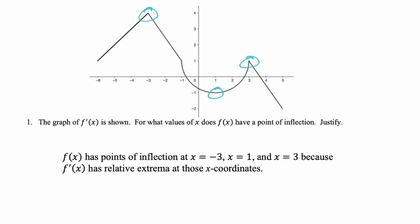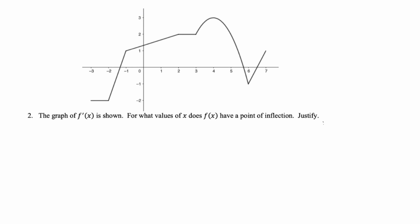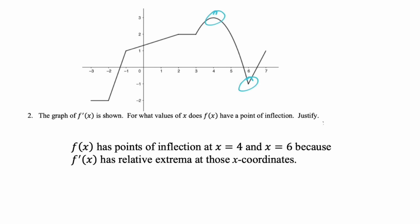Let's look at the next one, which is another graph — a little trickier. The graph of f' is shown above. For what values of x does f(x) have a point of inflection? Again, we're looking for relative extrema of f'. The answer: at x = 4 and x = 6, because f' has relative extrema at those x-coordinates.